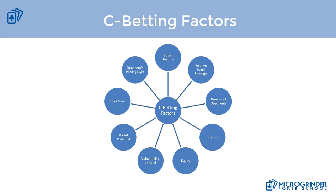The next item is vulnerability of our hand, which ties into protection betting and board texture. On a wet board texture, our hand is much more vulnerable than on a dry board, so we're incentivized to value bet or protection bet hands vulnerable to bad turn and river cards. On a dry board our hand is either way ahead or way behind — when way ahead, we can slow play, allow opponents to catch up, induce bets, or let them call c-bets when our hand looks weaker.